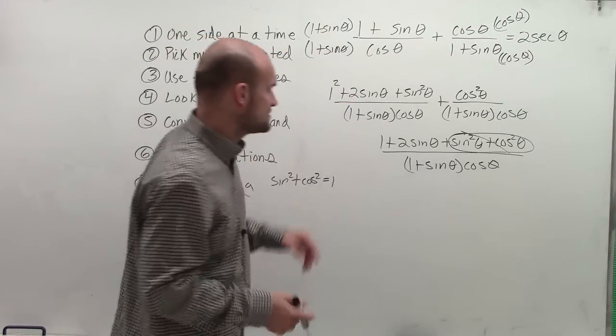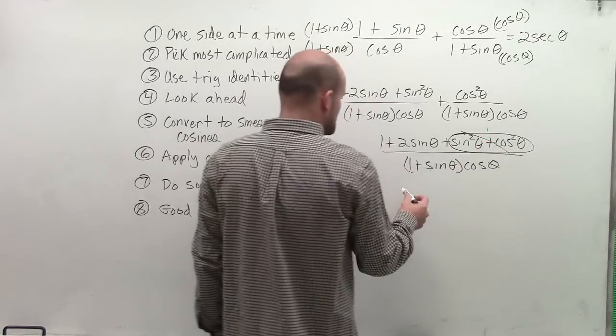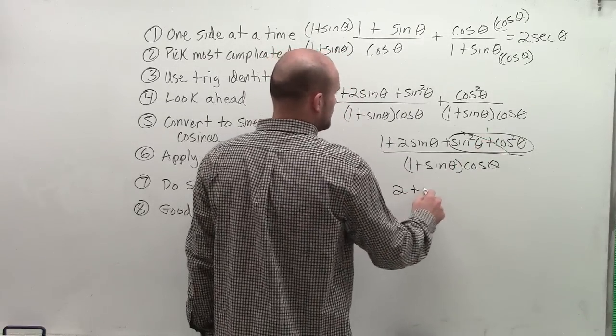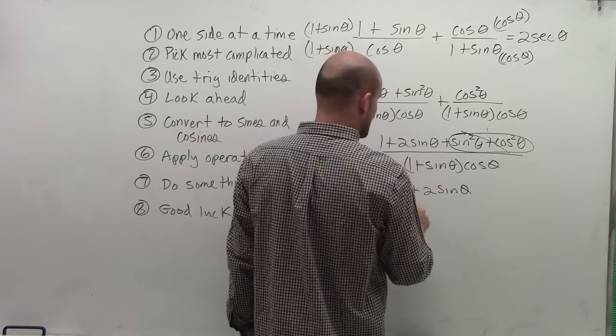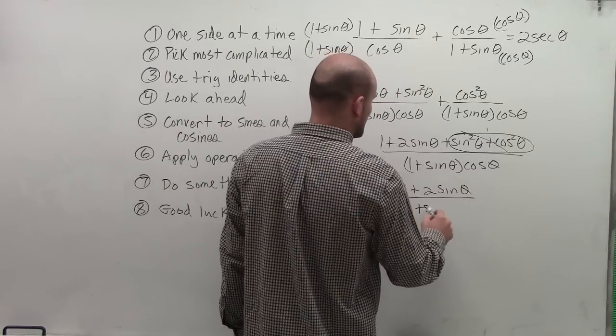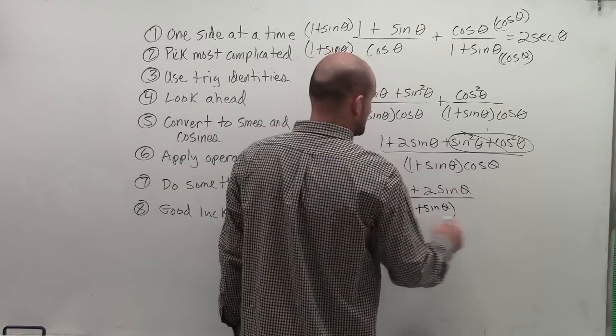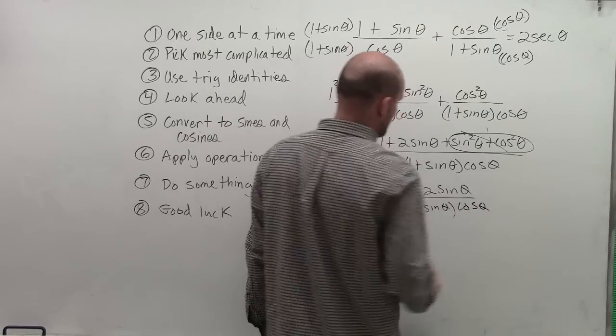So therefore, that's going to equal to 1. So now I'm going to have 2 plus 2 sine of theta divided by 1 plus sine of theta, times cosine of theta.